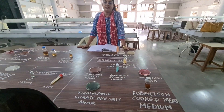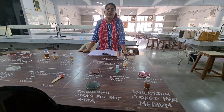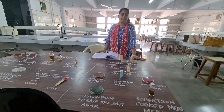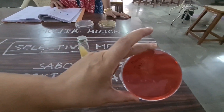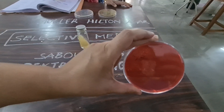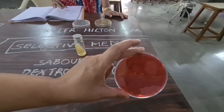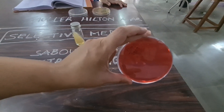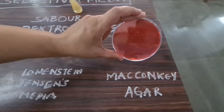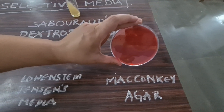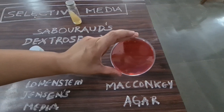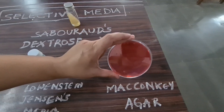Selective media are media that contain inhibitory substances which prevent the growth of unwanted organisms. An example is MacConkey agar — it is selective as well as differential media. It differentiates lactose-fermenting organisms from non-lactose-fermenting organisms, and is selective because it contains bile salts or sodium thioglycollate which inhibit non-intestinal organisms. It also contains the indicator neutral red. Lactose-fermenting organisms give a pink colour and non-lactose-fermenting organisms remain pale.